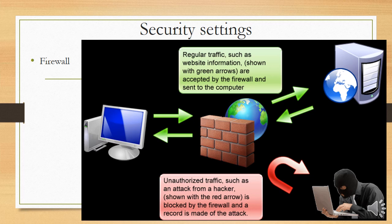Next we go to security settings. A firewall exists in your computer — it's usually software, but you also get hardware firewalls. Regular traffic such as website information, shown with the green arrows, is accepted by the firewall and sent to the computer from the internet or server. Good traffic is allowed, but a firewall's job is to stop unauthorized traffic, like an attack from a hacker. The firewall recognizes when unauthorized traffic comes through and has a way of stopping it.